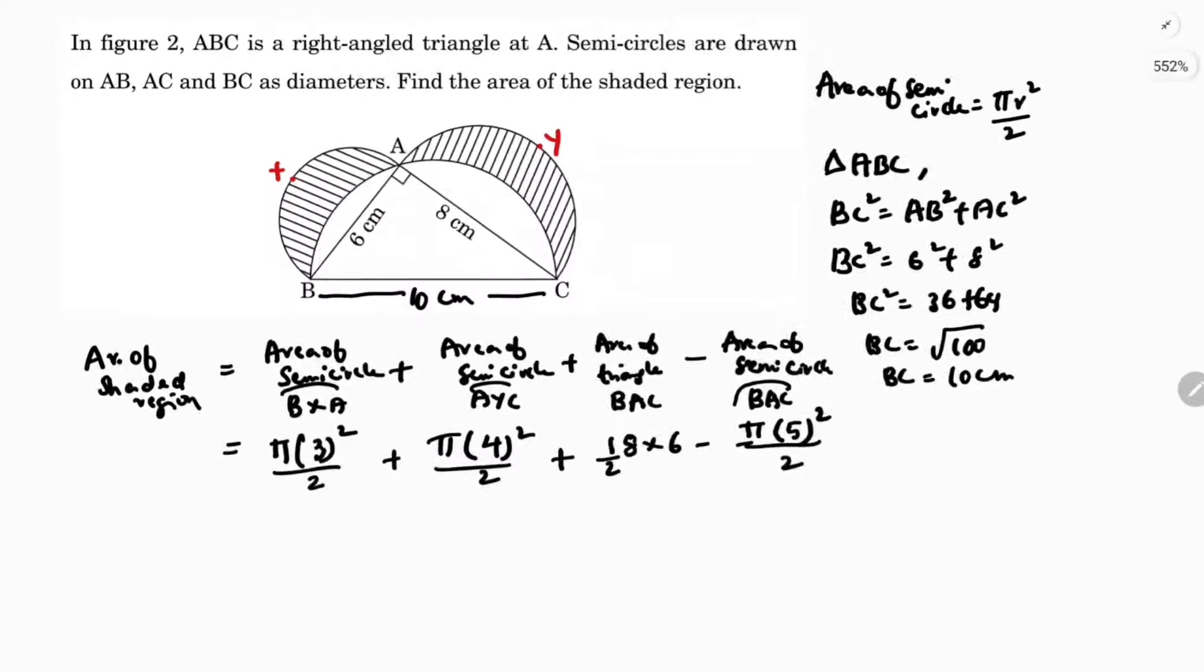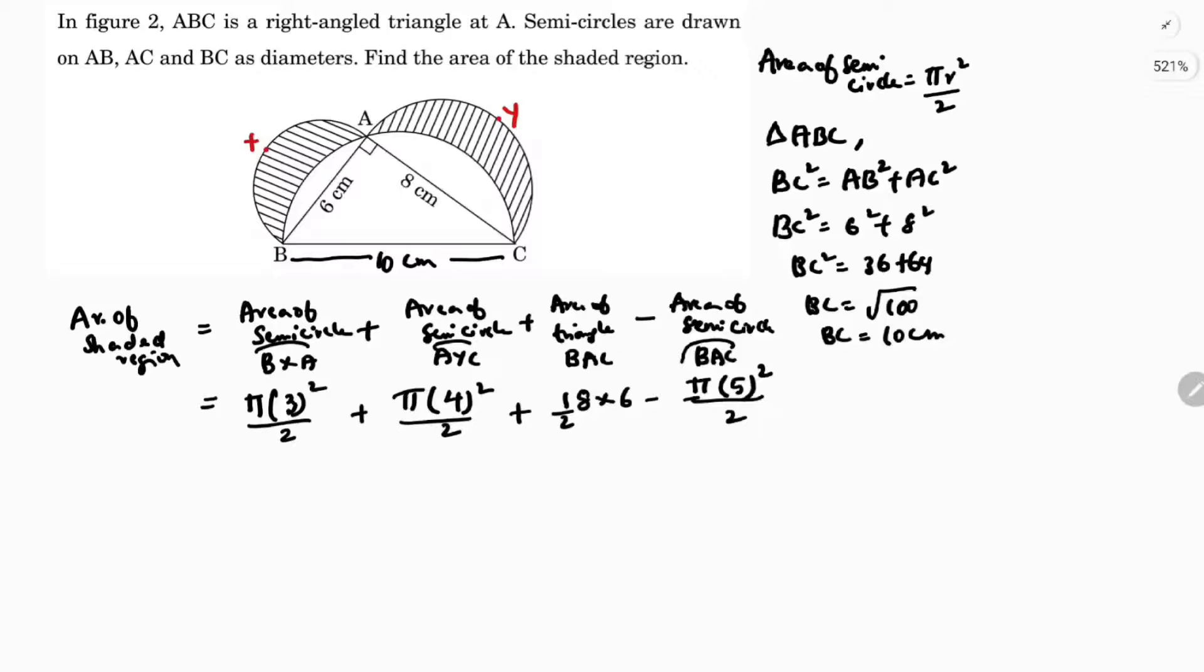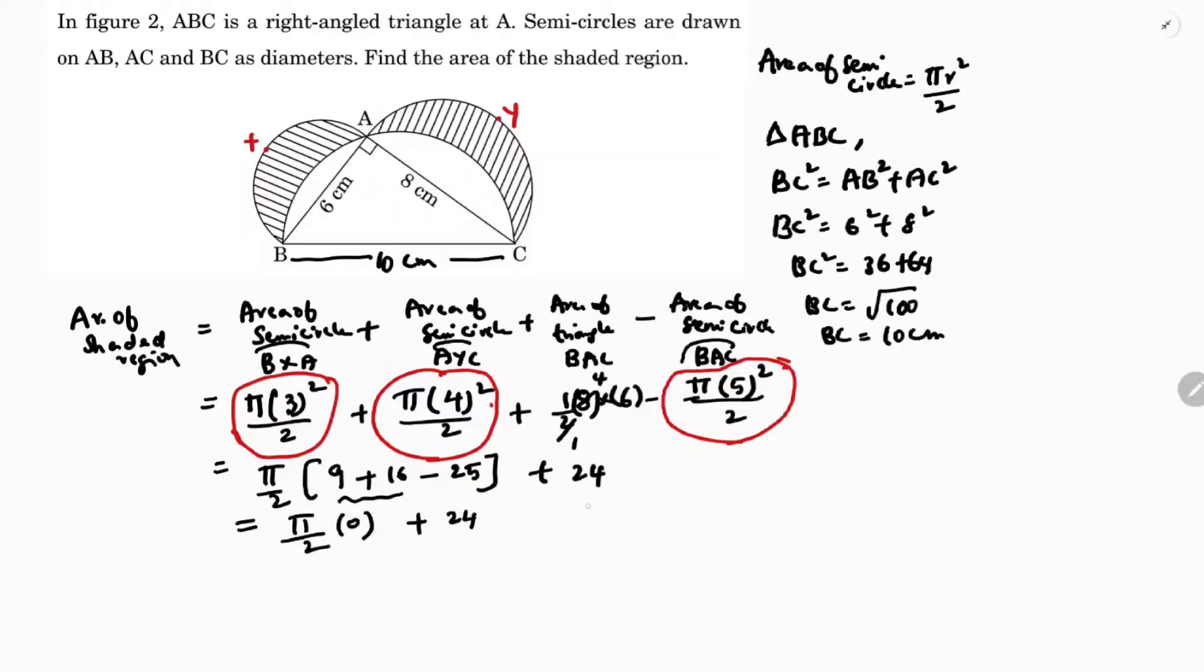If I simplify further, pi by 2 if I take common in these three. If I take pi by 2 common, what is left? 3 square is 9, 4 square is 16, minus 5 square is 25 plus here 2 times 4, 4 into 6 is 24. If you observe carefully, 9 plus 16 is 25. 25 minus 25 is pi by 2 times 0 plus 24.